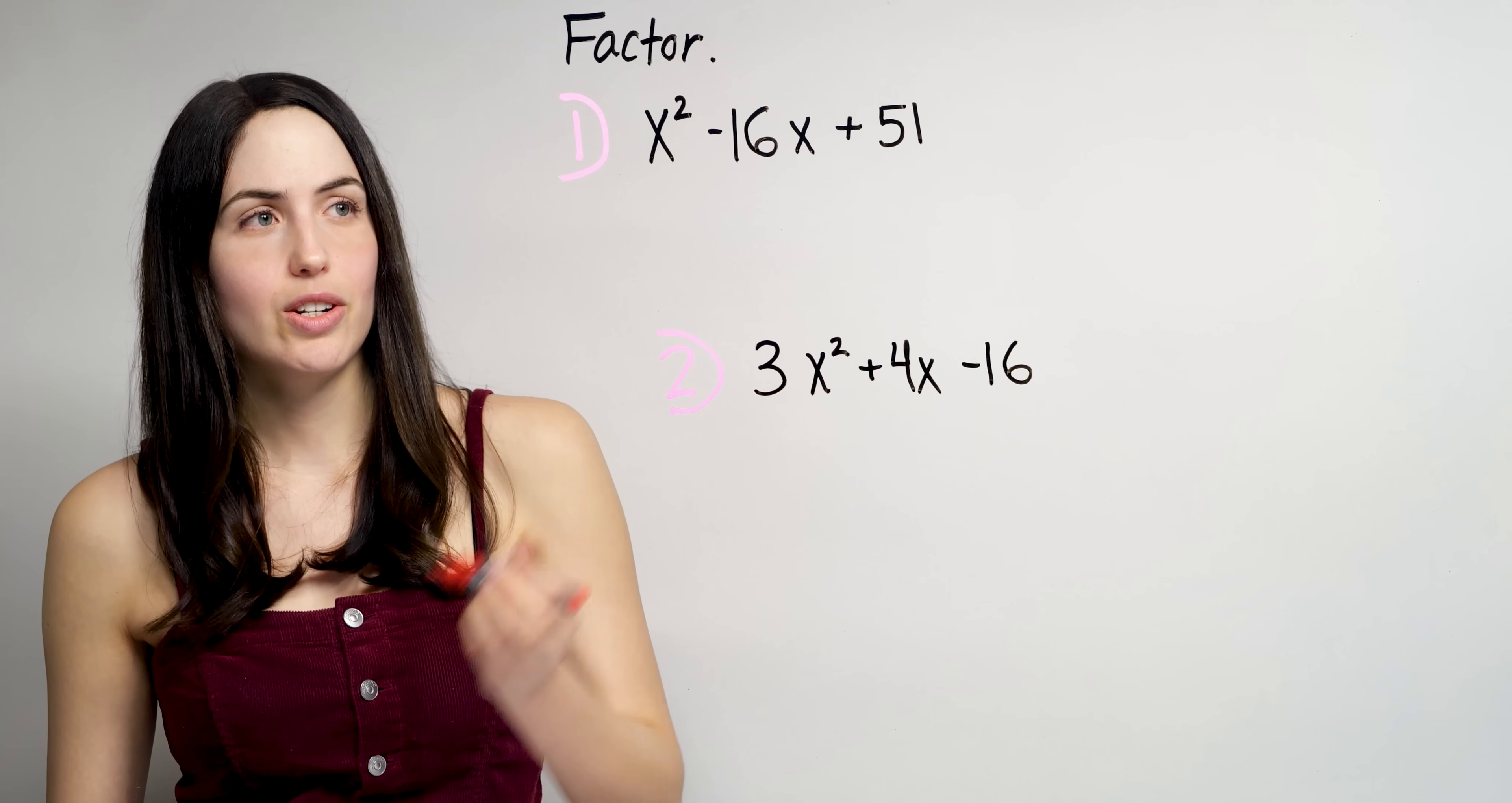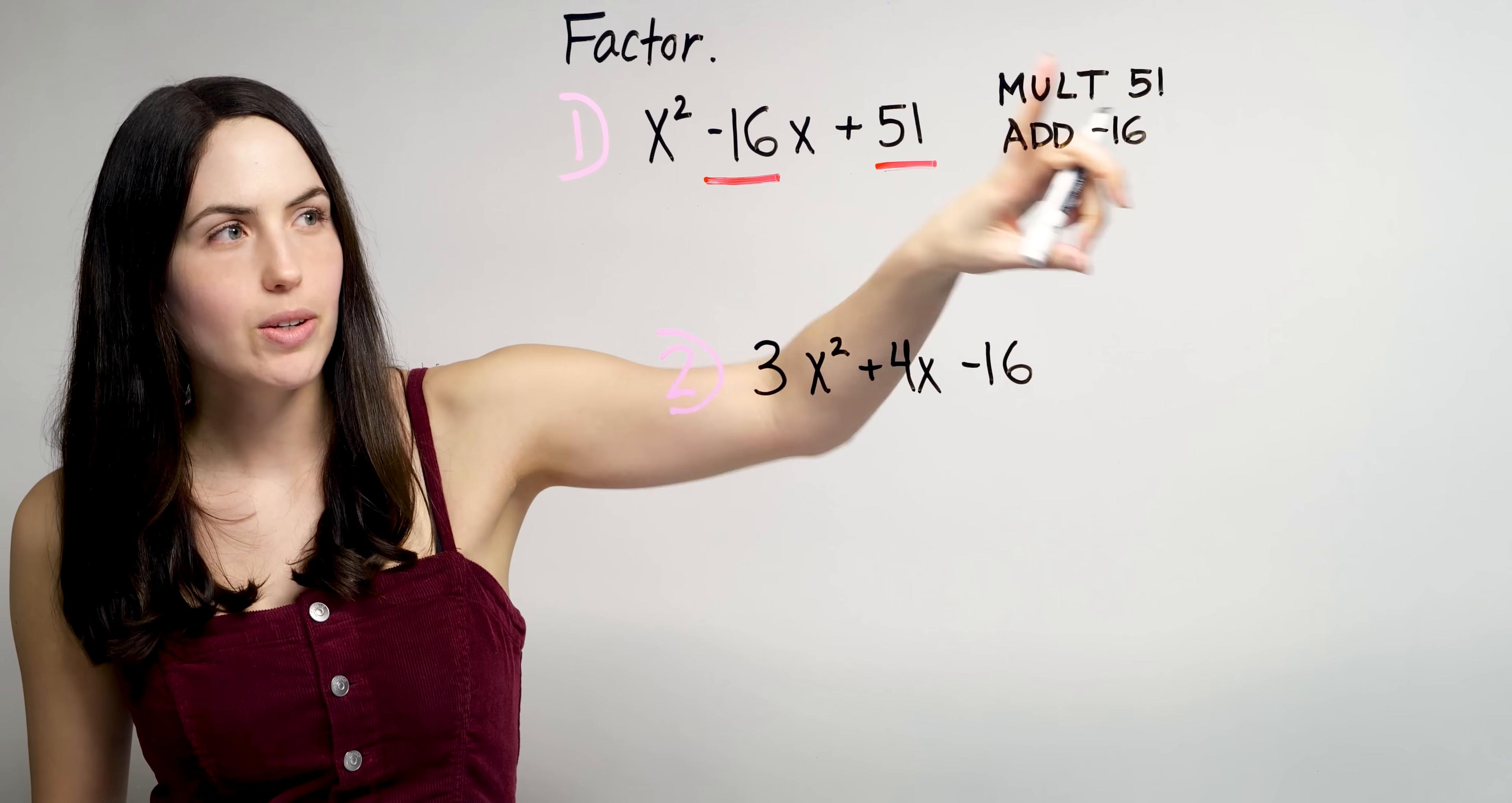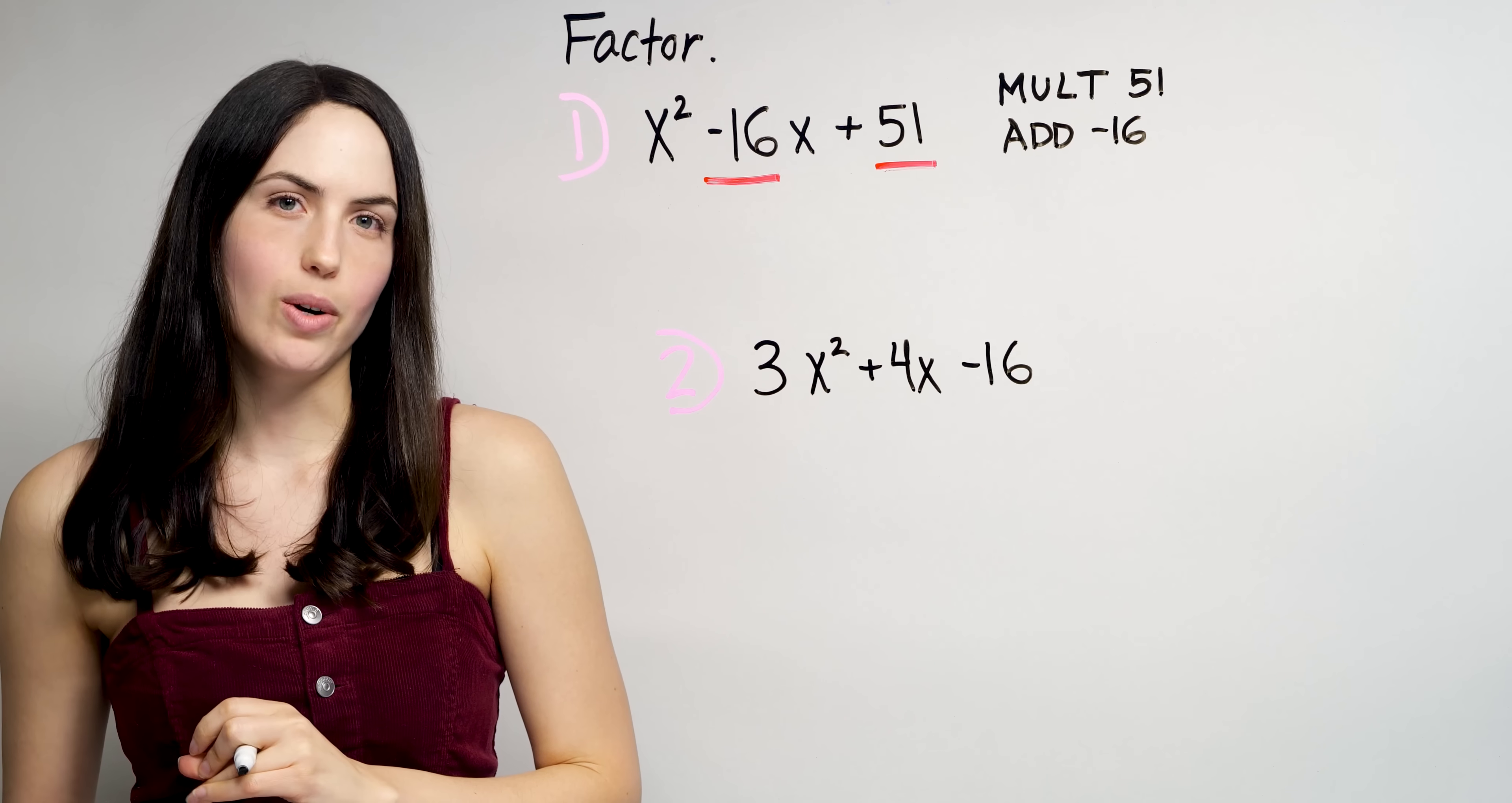Say you need to factor a quadratic like this, x squared minus 16x plus 51. So what you need to find are two numbers that multiply to give you this last number, positive 51, and which also add to give you this second number, negative 16. If you have no idea what I'm talking about, you can jump to my introduction video, Factoring Quadratics.